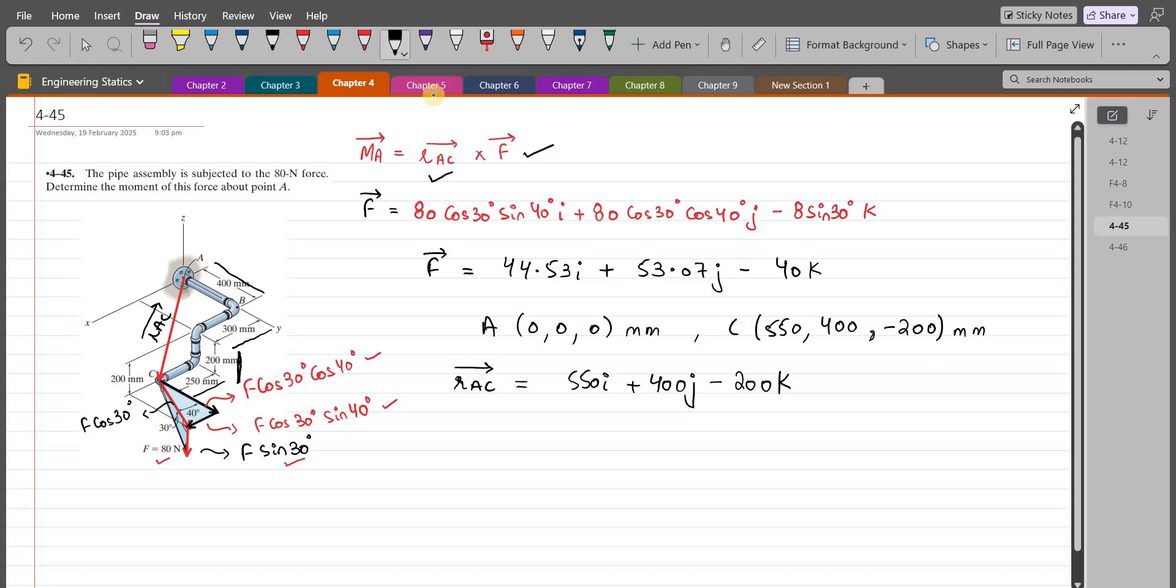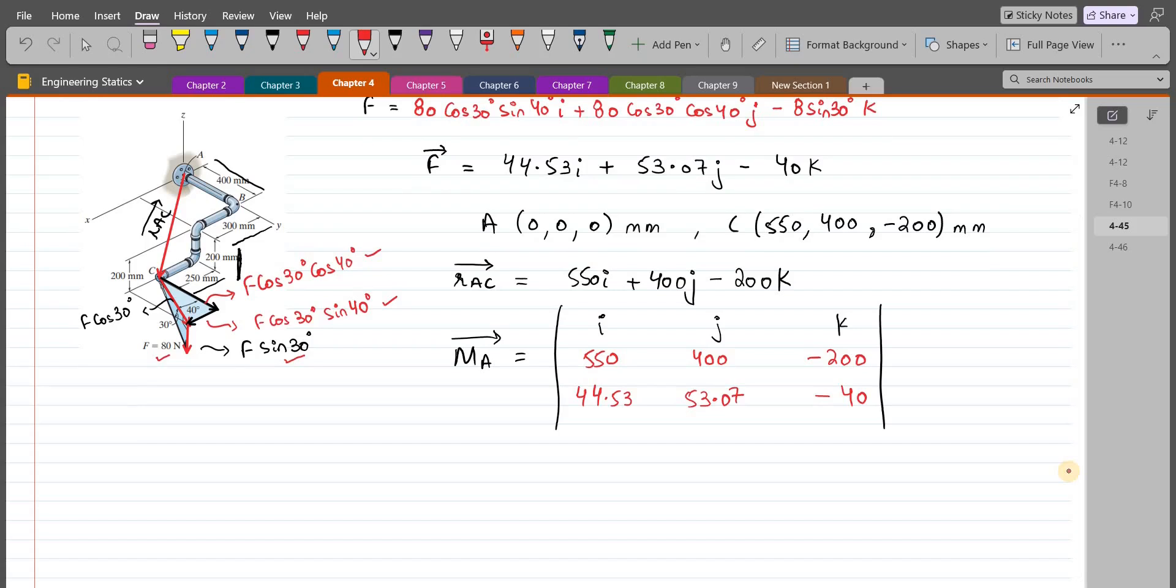We also know that the moment equation can be written as the determinant. So we have i, j, k and the components of R_AC: 550, 400, minus 200, and the components of force F: 44.53, 53.07, minus 40. Now we have to find the determinant of this 3 by 3 matrix, and that will be our moment about point A in terms of Cartesian vector form.